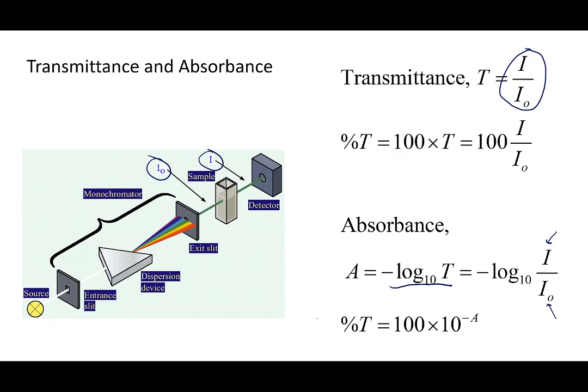The inverse equation is that percent transmittance equals 100 times 10 to the minus absorbance.